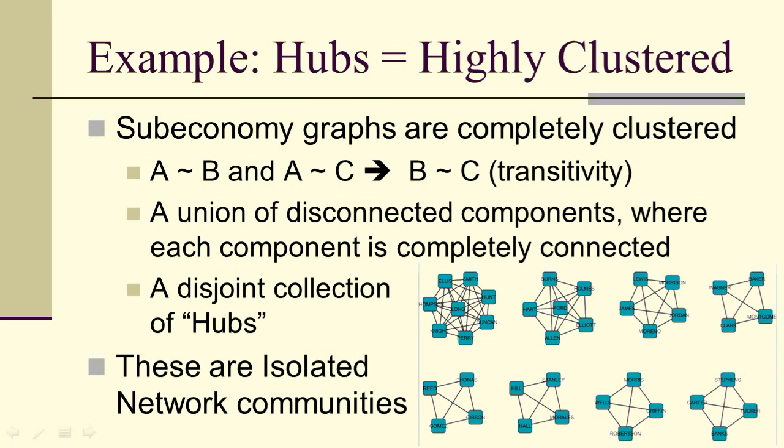For example, hubs are highly clustered. Sub-economy graphs are completely clustered in the sense that they're transitive—A is adjacent to B and A adjacent to C implies that B is adjacent to C. A union of disconnected components, where each component is completely connected, is still completely clustered.